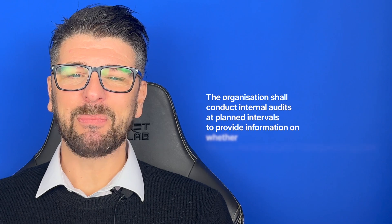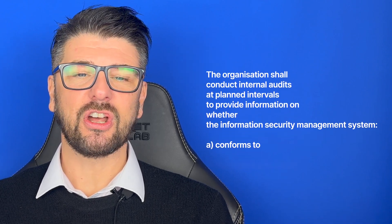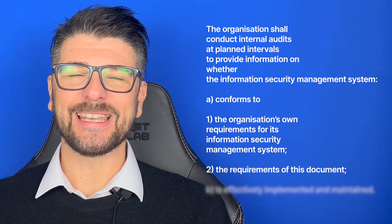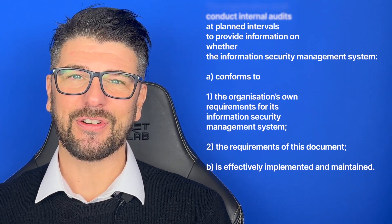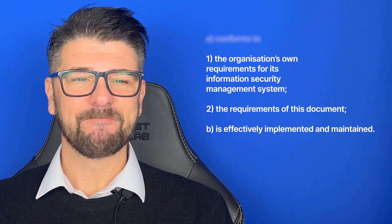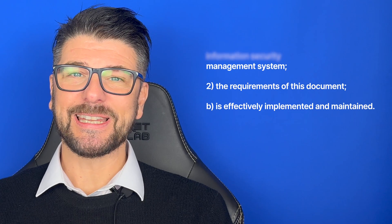ISO 27001 Clause 9.2 Internal Audit is broken down into two sub-clauses. We start with Clause 9.2.1 General: the organisation shall conduct internal audits at planned intervals to provide information on whether the Information Security Management System conforms to the organisation's own requirements for its information security management system and the requirements of this document, and is effectively implemented and maintained.